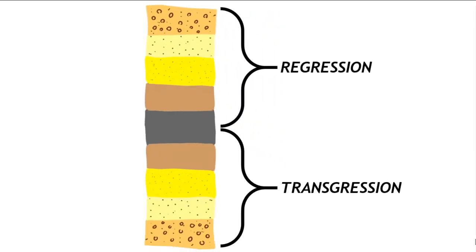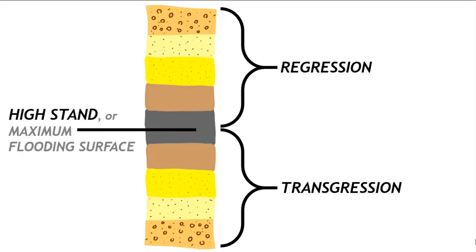The point in the middle where the sea level is the highest is called the high stand, or we can also use the terminology of the maximum flooding surface. So in other words, the greatest amount of land that was underwater at that time.